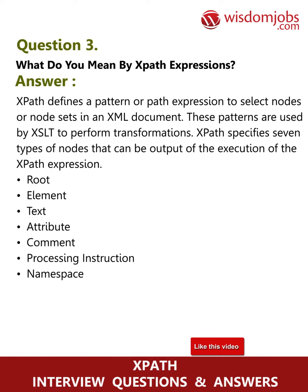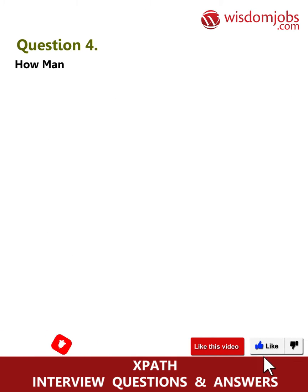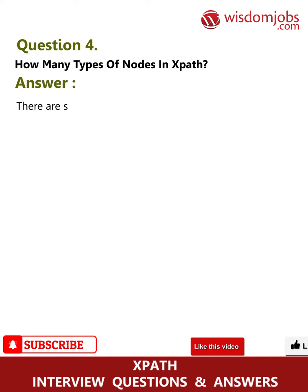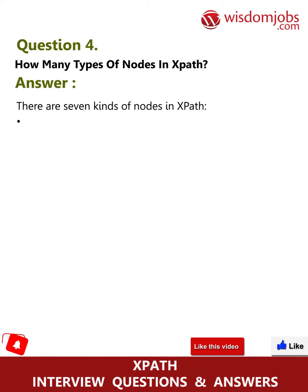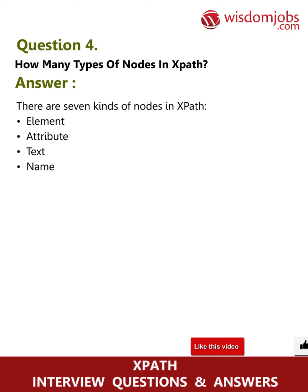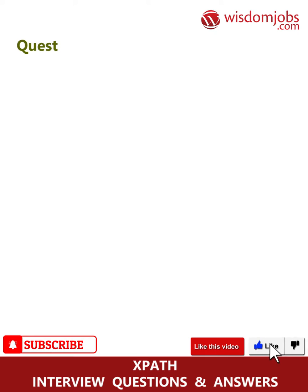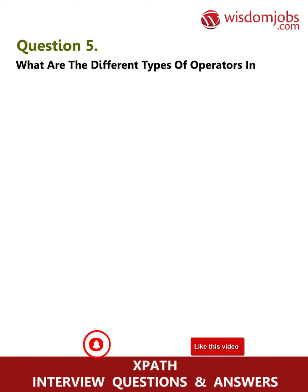and namespace. Question 4: How many types of nodes are in XPath? Answer: There are seven kinds of nodes in XPath: element, attribute, text, namespace, processing instruction, comment, and document nodes.